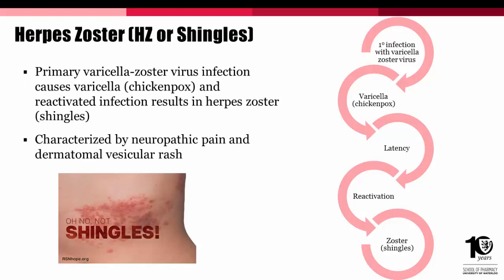Herpes zoster, commonly referred to as shingles, occurs when the varicella zoster virus reactivates from its latent state in a posterior dorsal root ganglion. Both chickenpox and herpes zoster are caused by the varicella zoster virus. Chickenpox is the active invasive phase of the virus, whereas shingles represents the reactivation of the latent phase. Due to its travel along nerve pathways to the skin, it is characterized by pain along the affected dermatome, followed by a unilateral vesicular eruption in two to three days, which is the hallmark diagnostic sign.